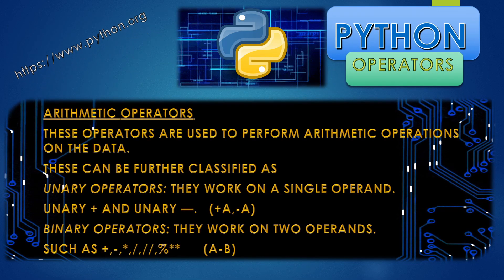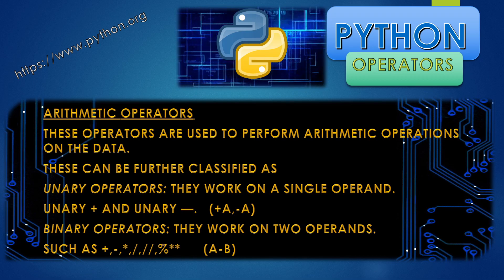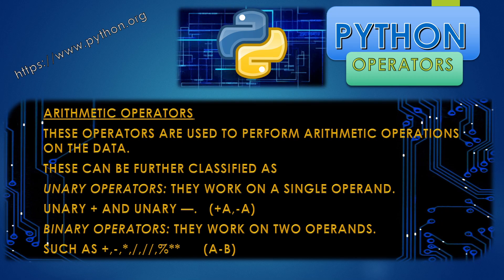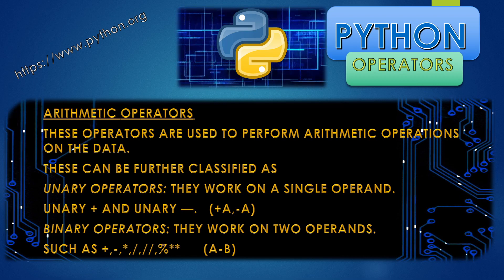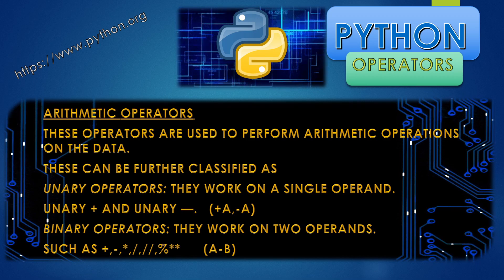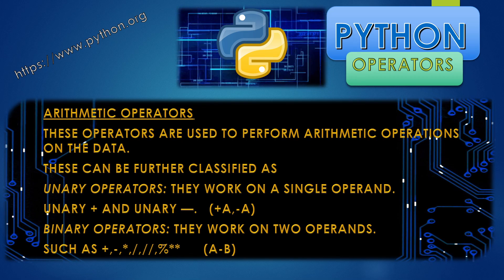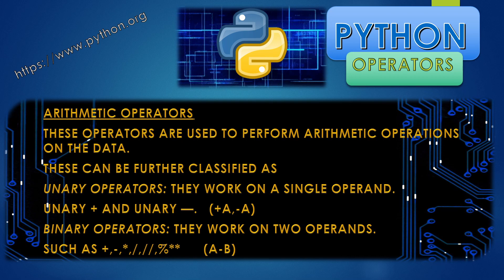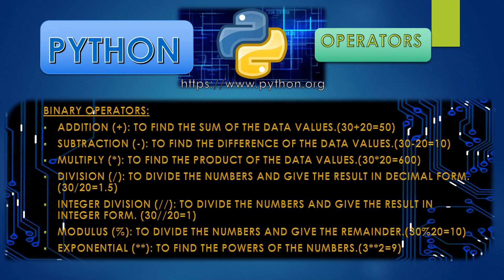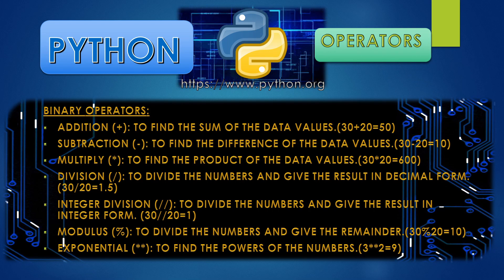If we talk about arithmetic operators, they are of two types. The first one is unary operators and the second one is binary operators. Unary operators have a single operand or a single variable — for example, plus A or minus A, with only one operator. Binary operators work on two operands, meaning two variables are required. For example, A minus B. There are many binary operators: addition, subtraction, multiplication, division, integer division, modulus division, and exponential.